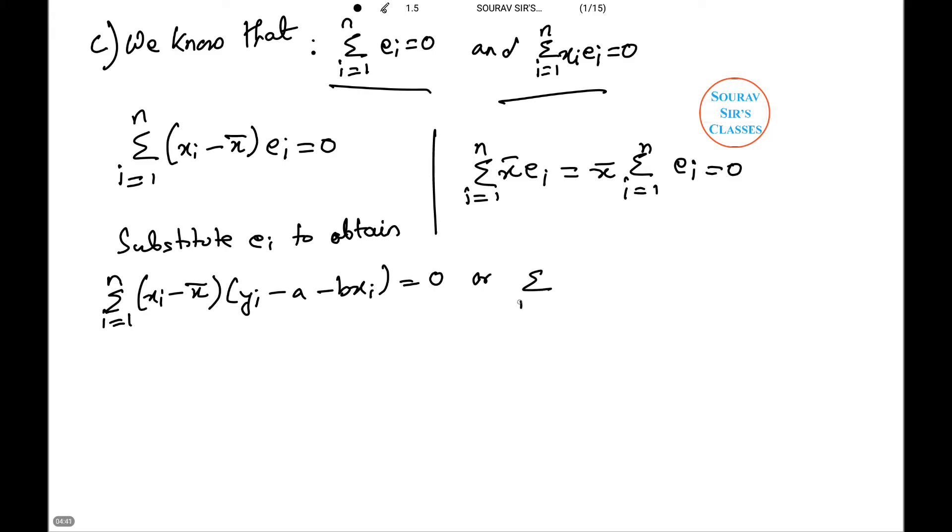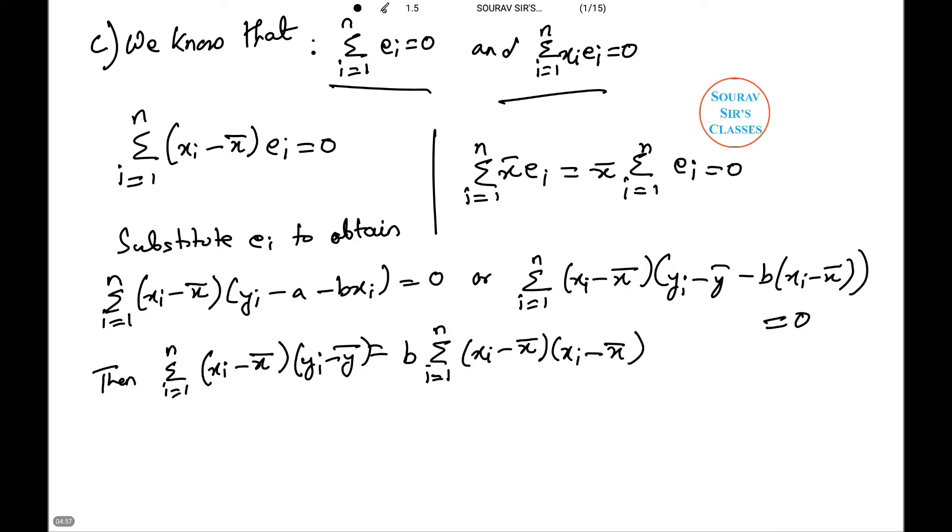Or summation i from 1 to n (x_i minus x bar) times (y_i minus y bar minus b(x_i minus x bar)) equals 0.